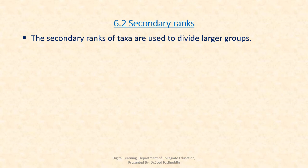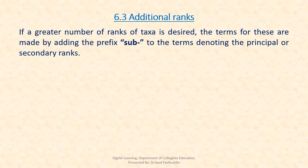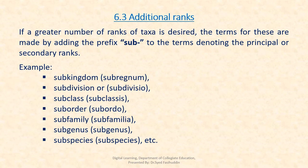Secondary ranks are used to divide larger groups. In descending sequence from family and below: a large family may be divided into tribes, a larger genus into sections, section into series, series into variety, variety into forma. Additional ranks — if a greater number of taxa is desired, the terms are made by adding the prefix 'sub' to the terms denoting the principal as well as secondary ranks, for example: sub-kingdom, sub-division, sub-class, sub-order, sub-family, sub-genus, sub-species, and so on.